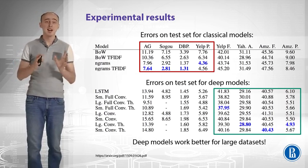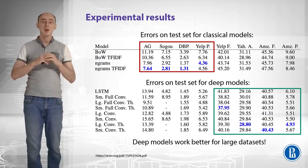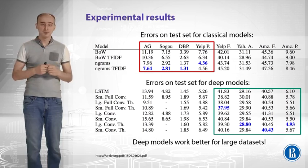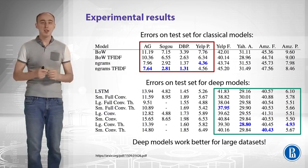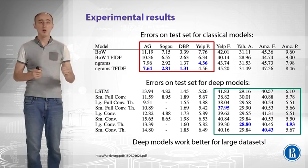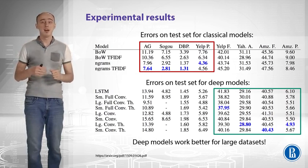And that is the second table. It contains errors on test set for the same datasets. And here you can see LSTM and our convolutional architecture that we have overviewed.